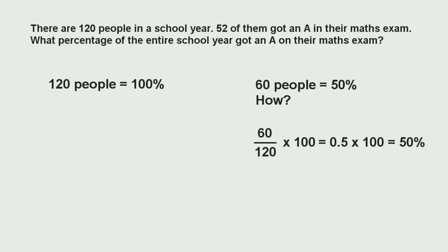This is basically what we do: we find it as a fraction first. We put the number we're trying to find as a percentage on top of the fraction, and the total at the bottom. So applying this to our example, we do 52 over 120, times it by 100. If you don't times it by 100 you just get it as a decimal; if you do, you get a percentage. In this case we get 43.3 recurring percent, which we can just call 43.3%.